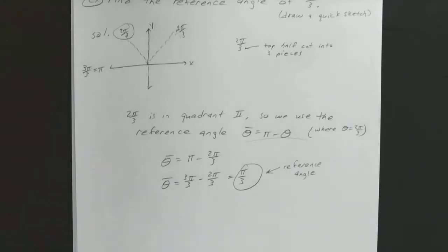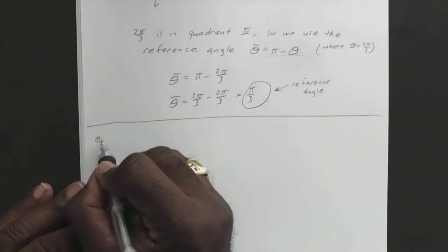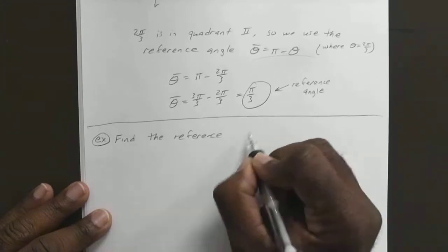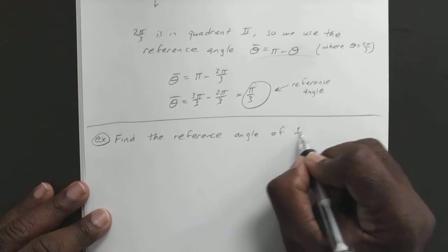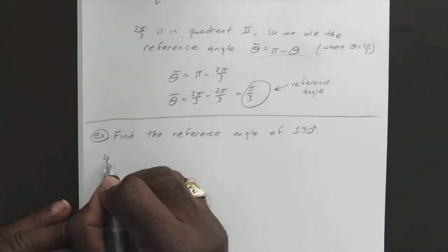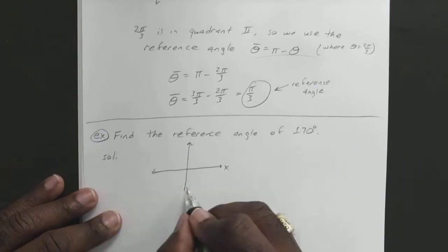Now which formula you use completely depends on which quadrant — that's why that little sketch helps. Sometimes they'll tell you what quadrant and sometimes they won't, so if they don't tell you, you have to figure it out on your own. Any questions on that? All right. So let's say if we wanted to find the reference angle of 170 degrees.